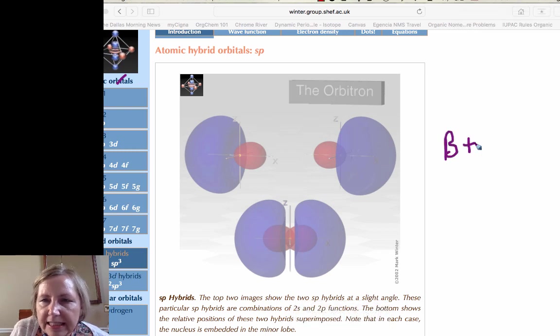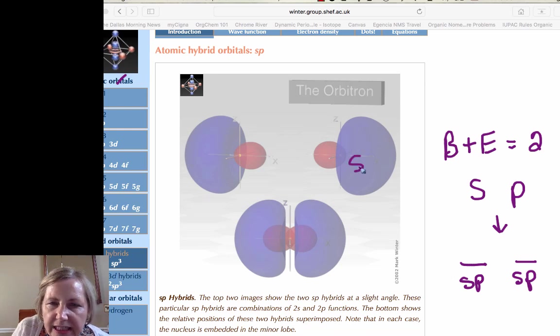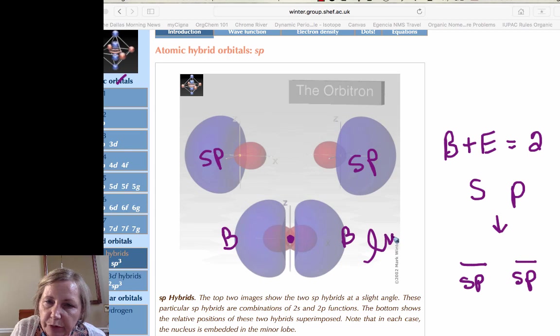So remember, if we had B plus E was equal to two, we would take an S and a P, and we're going to make two SP hybrids. So here's an SP and here's an SP, and we end up with a center. And this would be an atom, and this would be an atom, and we get a linear molecule.